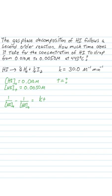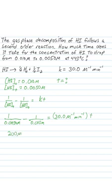So let's go ahead and plug that in, and so what we end up with is 1 over 0.0050 molar minus 1 over 0.010 molar. That's going to be equal to K times T, and so this value here becomes 200, so we have 200 inverse molar minus 100 inverse molar is equal to 30.0 inverse molarity inverse minutes times T.